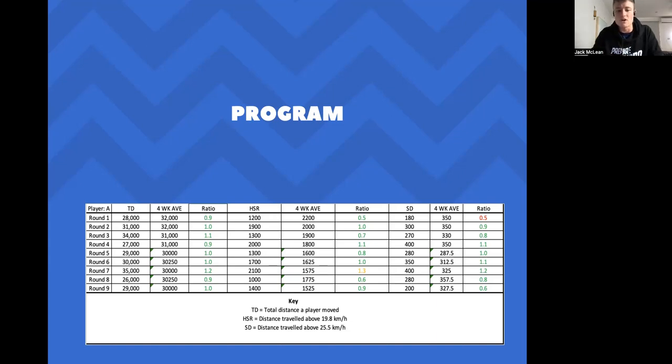And this is an example of a player A over nine rounds, green being if they're in the 0.8 to 1.3 of their acute ratio to their four-week chronic and if they're below that like seen in round one where the sprint distance was down, then they'll be flagged as a red and we might need in this case get some more volume in in their training or encourage them to work a little bit harder in that space on their next game.